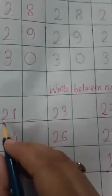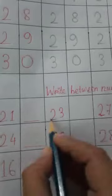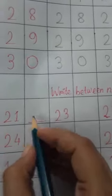Now the next is write between numbers. This is 2, 1, 21. This is 2, 3, 23. What comes between? The between number is 2, 2, 22.